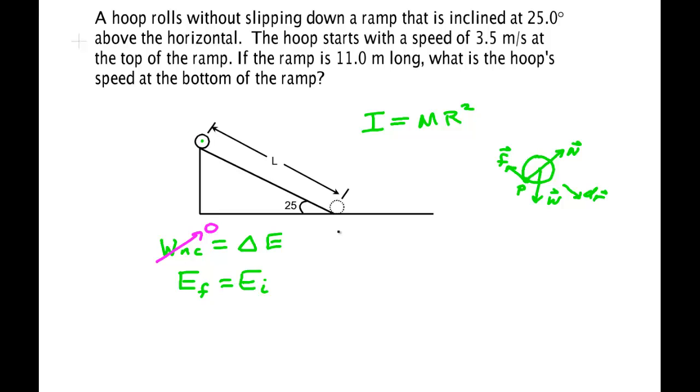So here's my initial. There's some height here, call that H. I'm going to call this Y equals zero. So this is Y equals H. And then this thing rolls down and eventually gets down to this point right here. At this point, it's moving with some velocity final and it's rolling with some angular velocity final.